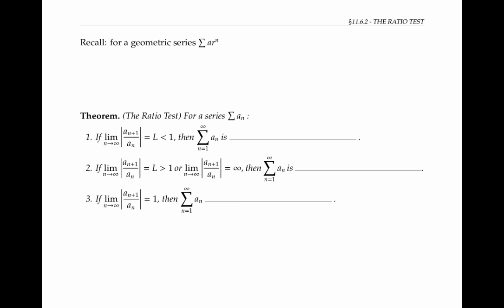If r has absolute value less than one, the series converges. While if r has absolute value greater than one, it diverges. For more general series, the ratio of consecutive terms is not necessarily a constant.